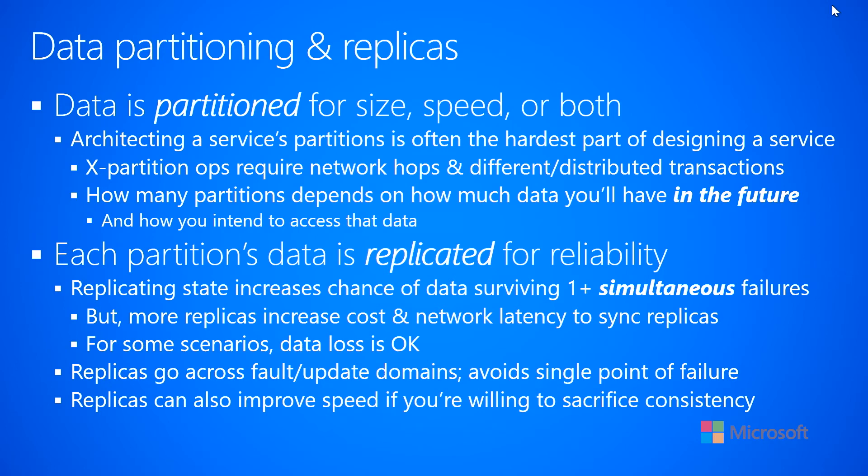Replicas can also improve speed if you're willing to sacrifice some consistency. If you have multiple replicas, instead of all read requests going to a primary replica, some can go to one replica and some to another, so both handle read requests in parallel, improving performance. But this comes at the cost of consistency. If a value of five is in both replicas and someone changes it to ten, that update goes to one replica and has to replicate across the wire — but if another request comes in before replication completes, it might get five back instead of ten. So there's some inconsistency of the data.